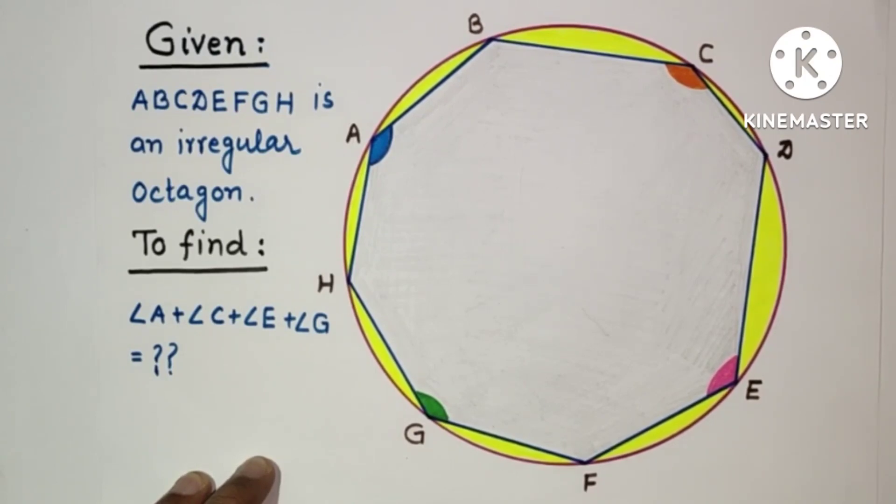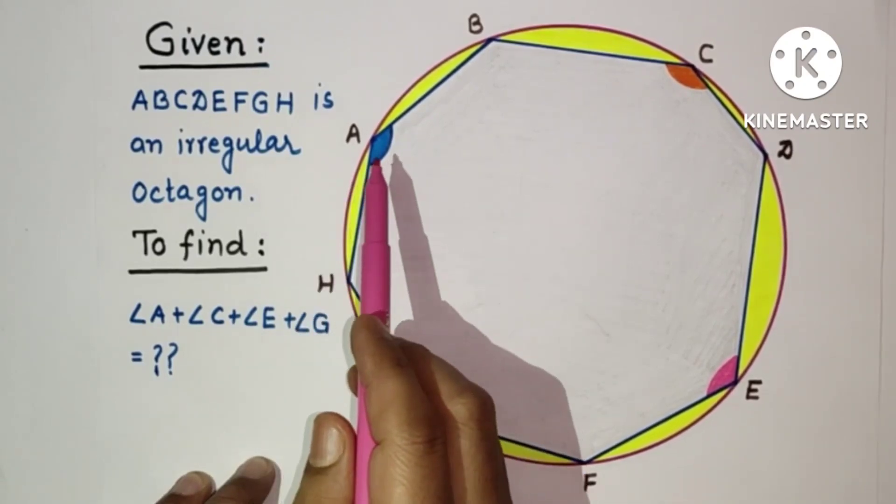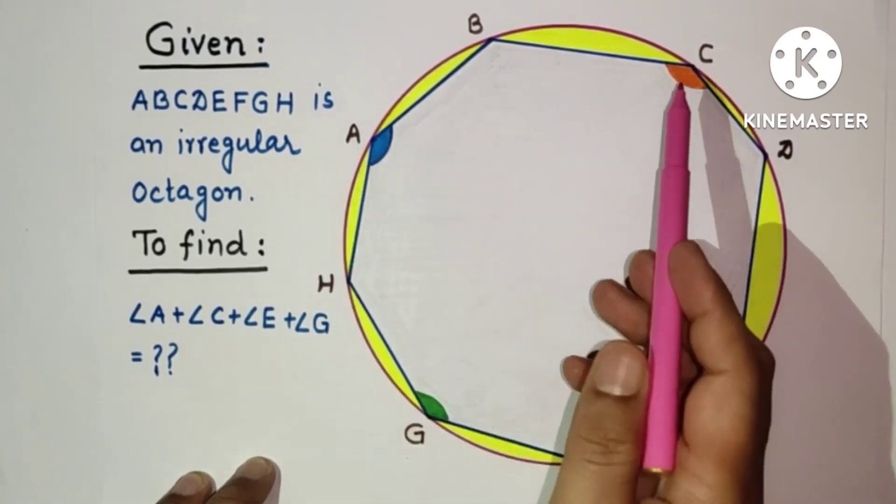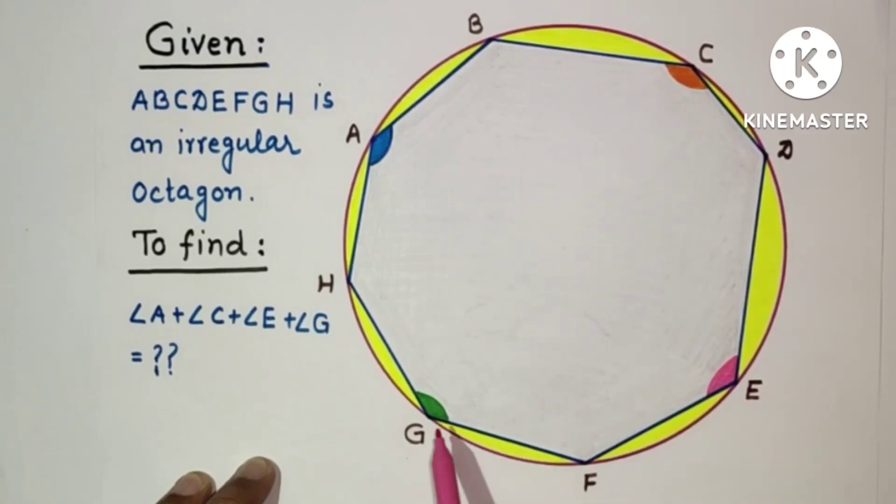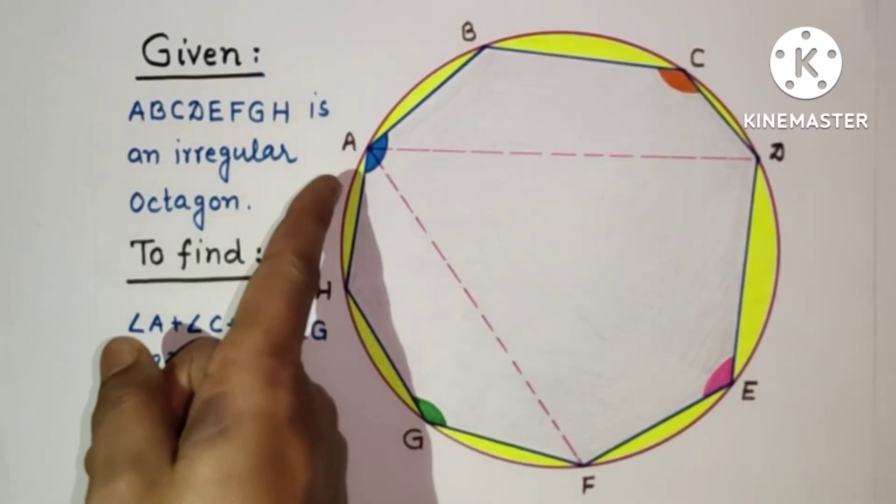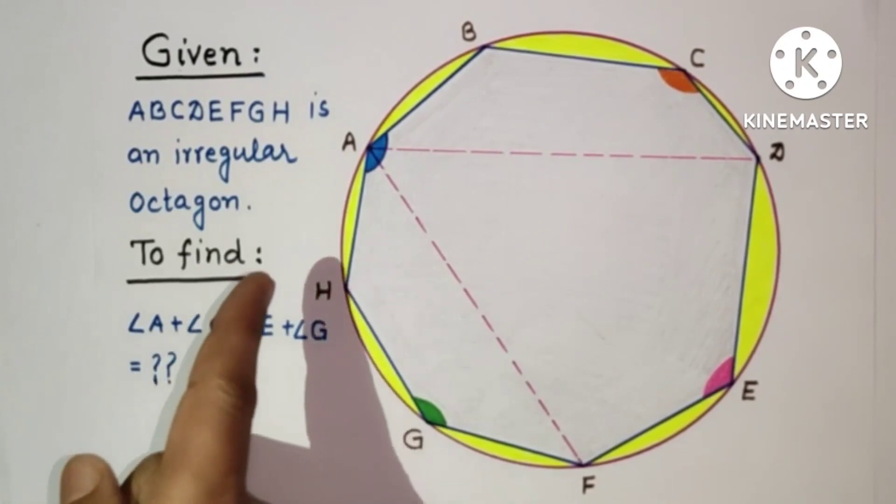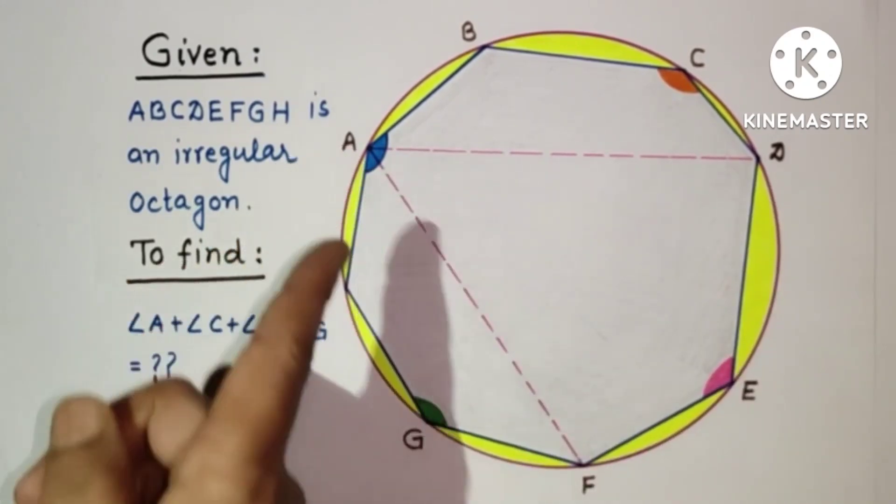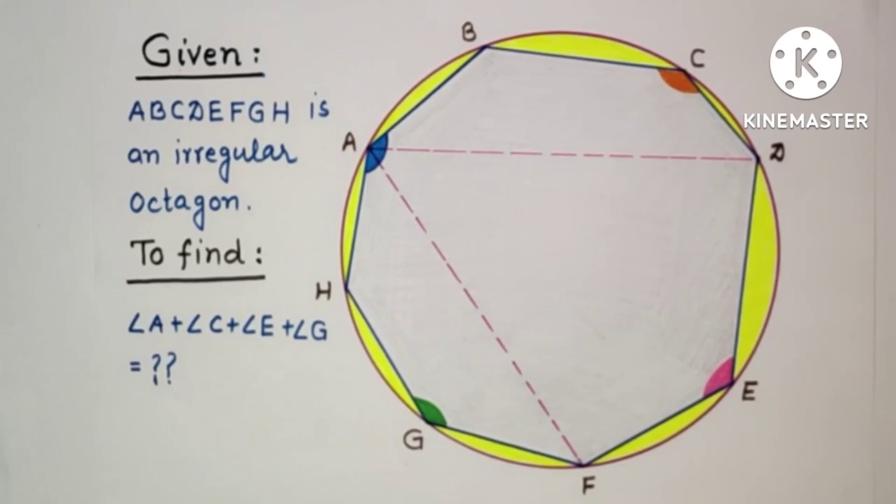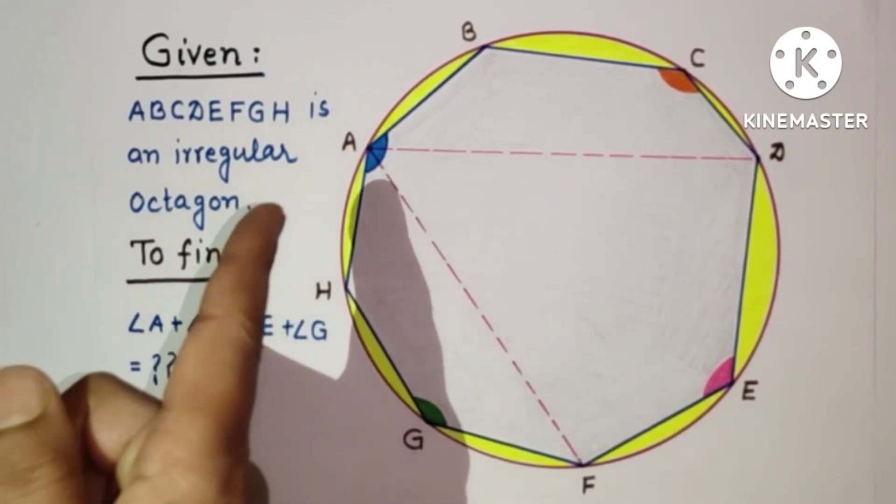If a quadrilateral is cyclic, then their opposite angle sums will be 180 degrees. To get that, we can select any angle - we can take A or C or E or G. From vertex A, I have joined AD and joined AF, and we will use that the sum of opposite angles of a cyclic quadrilateral will be supplementary, meaning the sum of opposite angles will be 180 degrees.